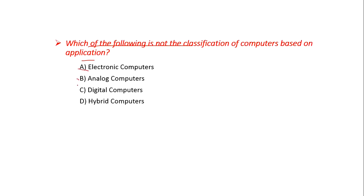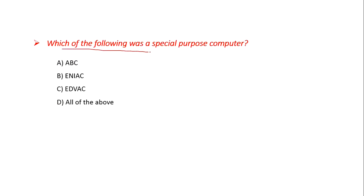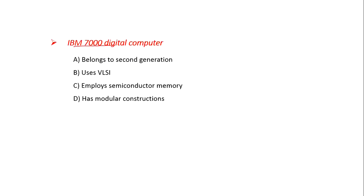Which of the following is not any classification of computers based on application? Option A: Electronic Computers, B: Analog, C: Digital, D: Hybrid. Analog, Digital, and Hybrid are application-based categories. So the answer is A: Electronic Computers. Which of the following was a special purpose computer? Options: A: ABC, B: NEX, C: ADVEC, D: All of the above. Friends, for Types of Computer, we have made a detailed video on our channel which you can go and watch. Thank you.